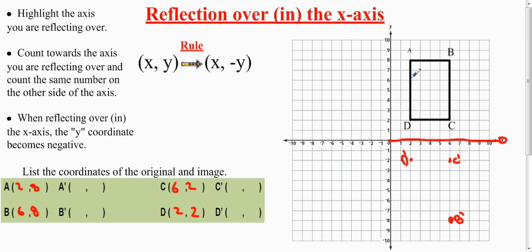A is 8 away from the reflection line. And that means A' has to be 8 away as well. Once you have all of the points, just connect them.